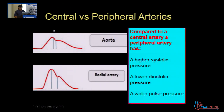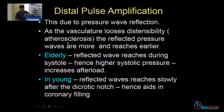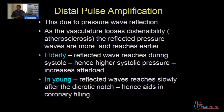This represents the aorta and this represents the radial artery. You can see that the dicrotic notch appears later in the radial artery, and the diastolic waveform is more prominent in the radial artery than in the central artery. This pulse amplification is because of the change in impedance of the peripheral arteries.